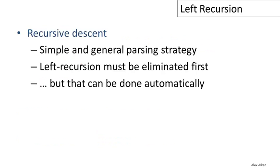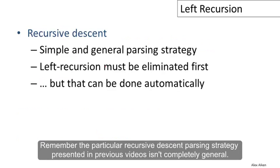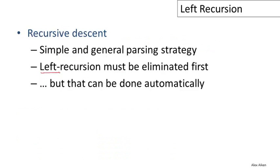So to summarize our discussion of recursive descent parsing. It's a simple and general parsing strategy. You can parse any context free grammar using recursive descent. So it's very general in that respect. It cannot work with left recursive grammars. So you must eliminate the left recursion. Now in principle this can be done automatically. You can have algorithms that will eliminate the left recursion. In practice people eliminate the left recursion by hand.